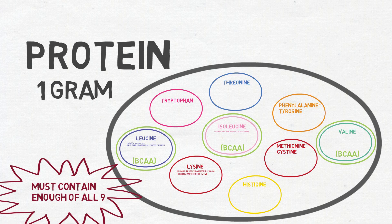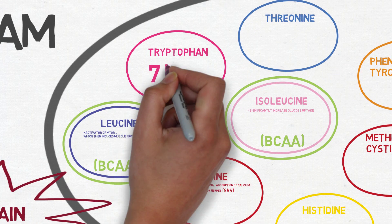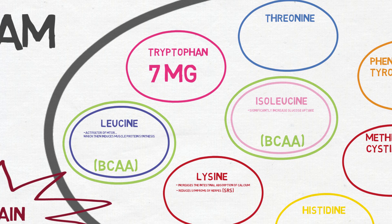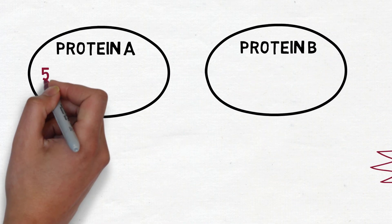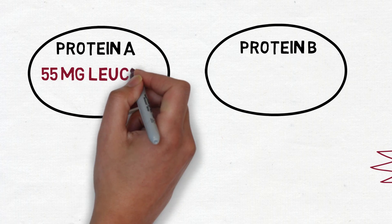This is why a gram of protein can mean something different depending on its source. As an example, to be considered a complete protein, a food needs a minimum of just seven milligrams of tryptophan, but it needs a minimum of 55 milligrams of leucine per gram of protein. This also means that while a gram of protein from one source may have 55 milligrams of leucine—that's just a minimum—a gram of protein from another source could have 89 milligrams of leucine.